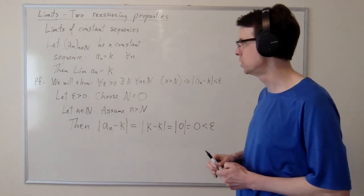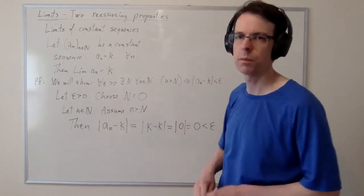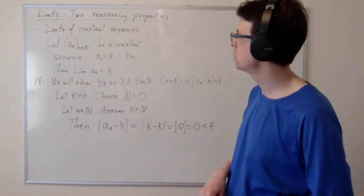It doesn't matter what it is. Might as well choose zero. So choose N equals zero. It doesn't figure into the proof. We get this done and it's all good. So that's how we prove that a constant sequence converges.